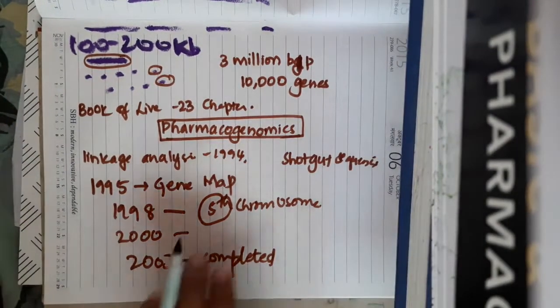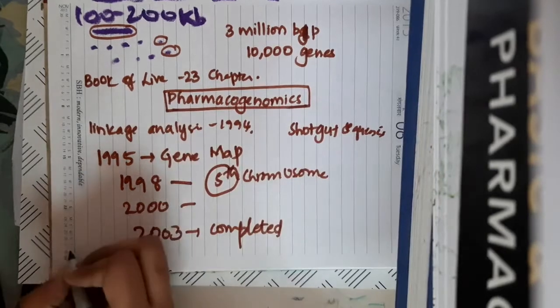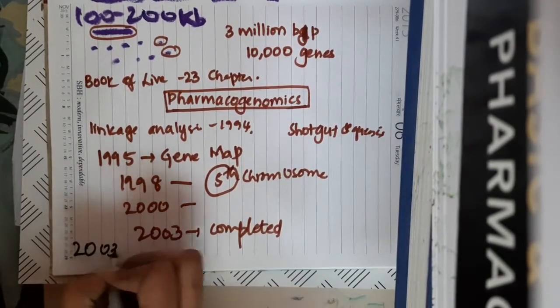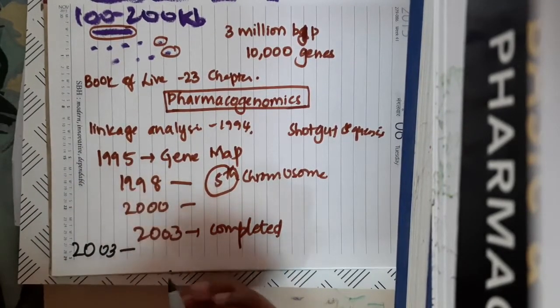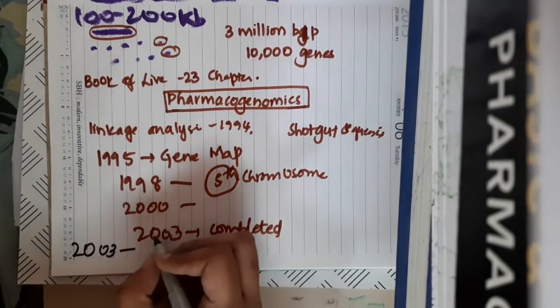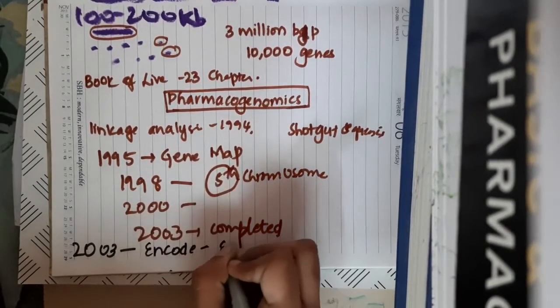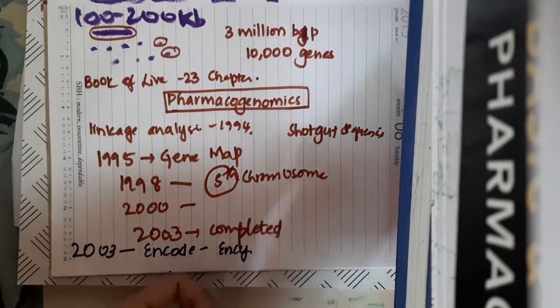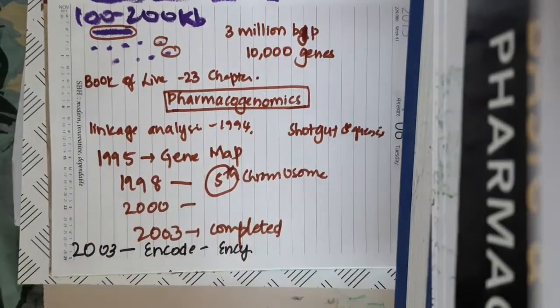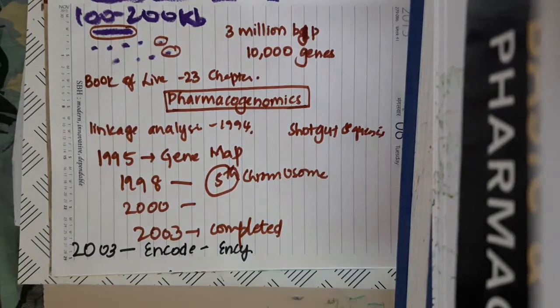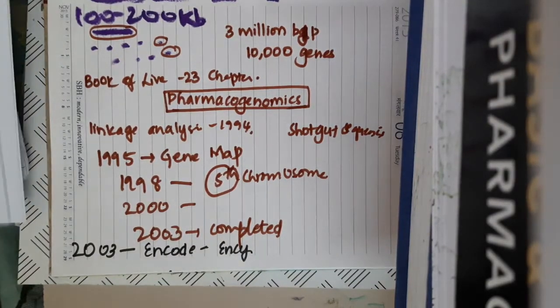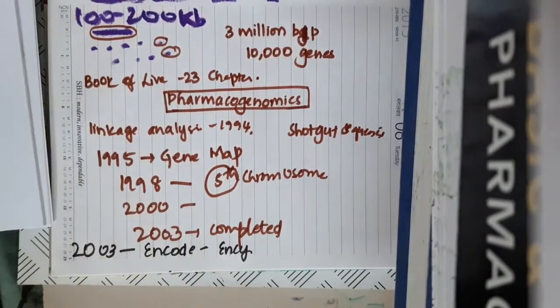After this Human Genome Project, a new project has been started in 2003 by National Human Genome Research Institute, which is called as ENCODE, that is Encyclopedia for DNA Elements. This is about the Human Genome Sequencing. Thank you guys for watching my lecture.